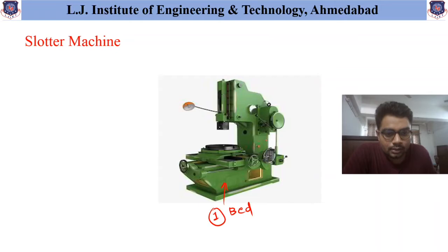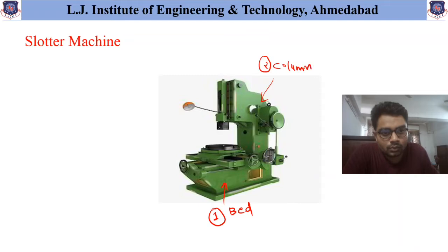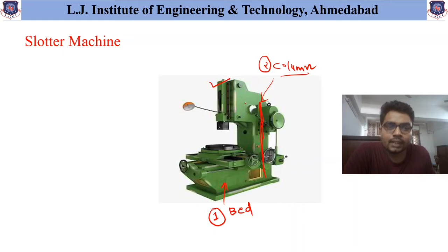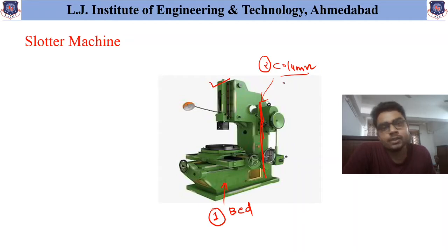The next major important part is called the column. This column is the vertical part, as you can see over here, and this vertical part is used to support the main ram movement obtained in the slaughter machine. This column also consists of the main mechanism used to obtain the table movement or the slaughter movement required during the machining process.